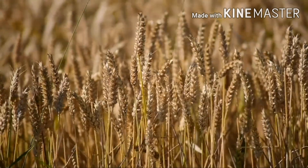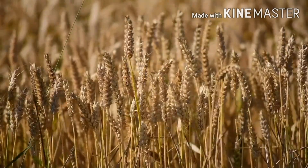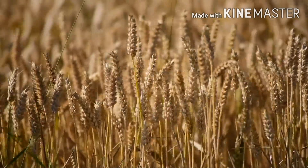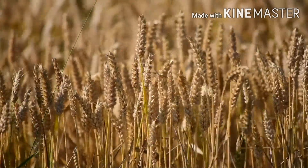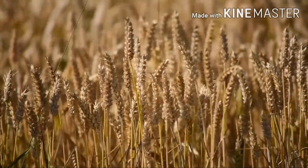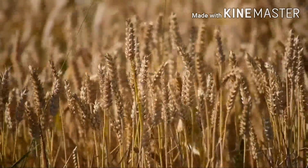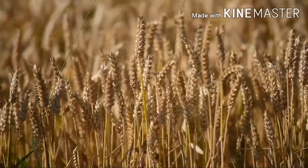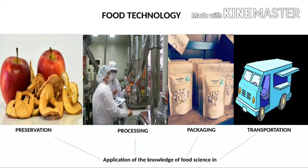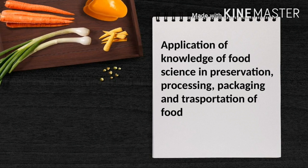Similarly, the change in color of onion while cooking is an example of food chemistry. Have you ever wondered how potatoes from the farm get converted to easy convenience food that we all love? Yes, I'm talking about the potato chips packets that you get from the shelves of supermarkets. Before getting into the details, let's first understand the term food technology: the application of the knowledge of food science in preservation, processing, packaging, and transportation of food.